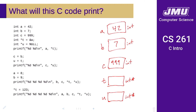We initialize t to be the address of a, so whatever the address of that particular memory location is, that is the value of t. We generally draw these as arrows since we don't know the actual numbers of the memory addresses and that's not terribly important. This indicates t is now a pointer to a. We're also initializing u to null, meaning it's not currently a pointer to anything.